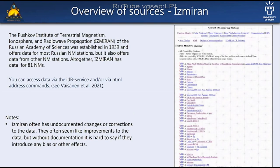IZMIRAN is the Pushkov Institute of Terrestrial Magnetism, Ionosphere, and Radio Wave Propagation. They offer data for Russian stations and other eastern stations, and part of the dataset is based on a VDC mirror they have. They have also updated some data or made corrections, but in some cases there is no clear documentation of what has been done — though often the data looks quite plausible.